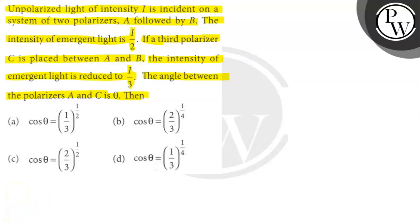So let initial intensity be I. Intensity of the beam after passing through A is I₁ equals 1 by 2. Given that intensity after B is I by 2.